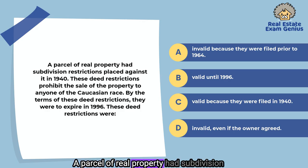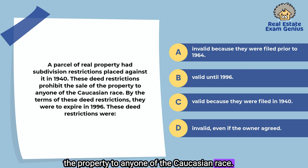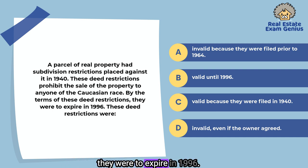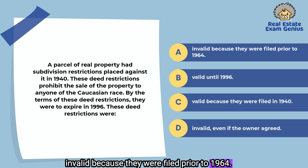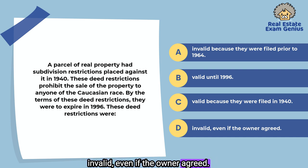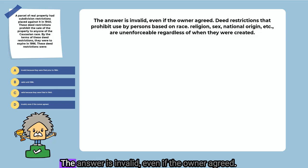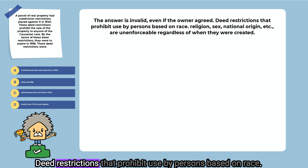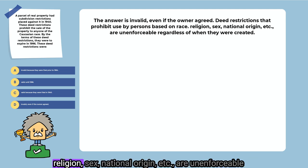A parcel of real property had subdivision restrictions placed against it in 1940. These deed restrictions prohibit the sale of the property to anyone of the Caucasian race, and were set to expire in 1996. These deed restrictions were: invalid because they were filed prior to 1964, valid until 1996, valid because they were filed in 1940, or invalid even if the owner agreed. The answer is invalid, even if the owner agreed. Restrictions that prohibit use by persons based on race, religion, sex, or national origin are unenforceable regardless of when they were created.